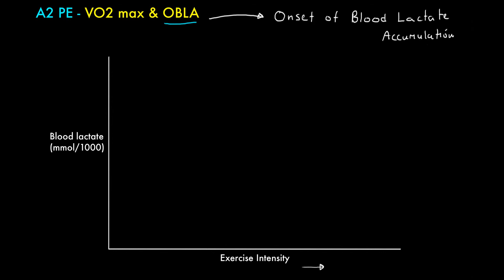Before we map it out graphically, you might want to add the word 'rapid' in front of the definition — the rapid onset of blood lactate accumulation. Because basically, whenever we start exercising, we do accumulate some blood lactate. But at lower intensities we can manage that level. There's a specific point we reach where we inevitably start to rapidly accumulate lots of blood lactate, which causes fatigue, slowing down, or stopping of exercise. The point that all people reach is 4 millimoles per litre in the blood.